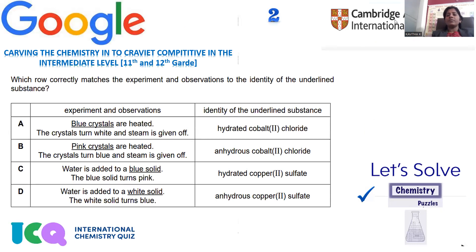Question number two is collected from Cambridge Assessment International Education. The question asks which row correctly matches the experiment and observation to the identity of the underlying substance. In one experiment, blue crystals are heated and crystals turn white, with steam given off — so initially the compound is hydrated and after heating it becomes anhydrous because steam is evolved.